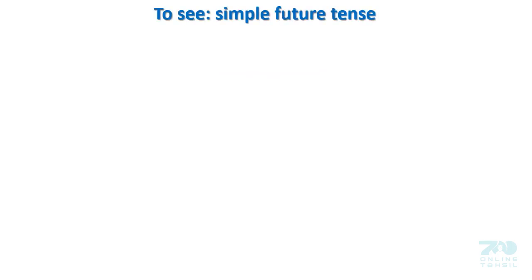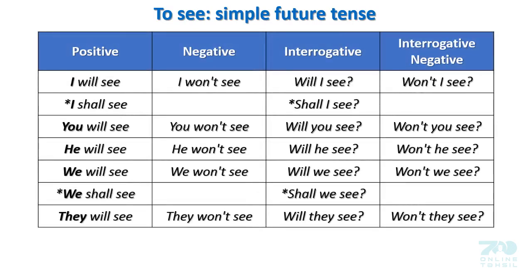Simple future tense — 'to see.' Positive: I will see. Negative: I won't see. Interrogative: Will I see? Interrogative negative: Won't I see? Also: I shall see. Shall I see? You will see. You won't see. Will you see? Won't you see? He will see. He won't see. Will he see? Won't he see? We will see. We won't see. Will we see? Won't we see? We shall see. Shall we see? They will see. They won't see. Will they see? Won't they see?